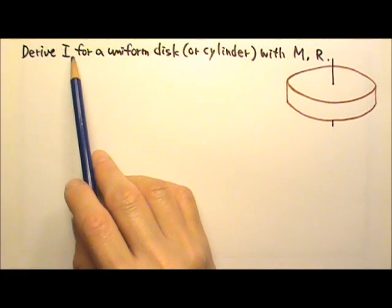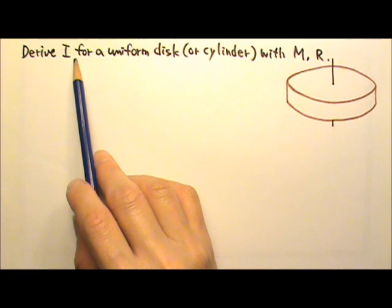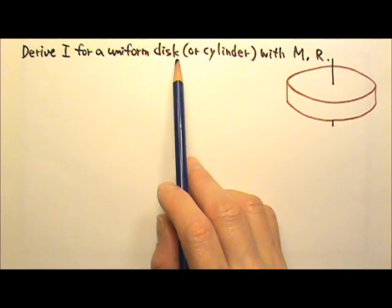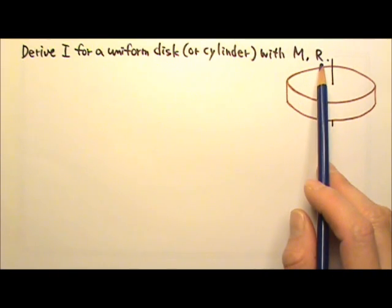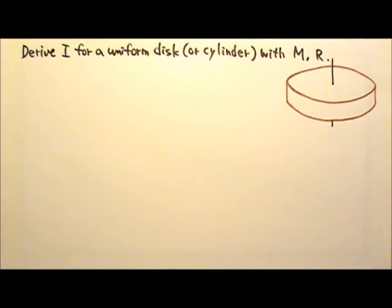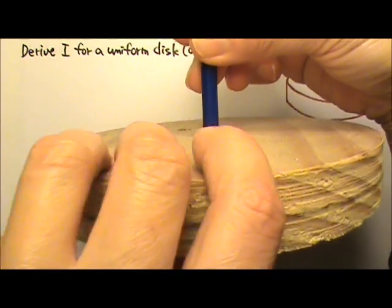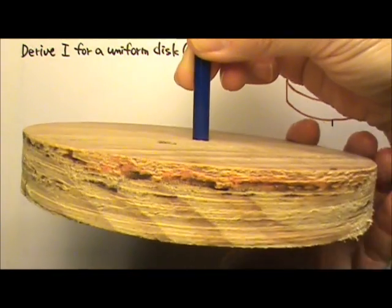Derive an expression for the rotational inertia or moment of inertia for a uniform solid disc or cylinder with mass m and radius r about its cylinder axis, meaning the disc or cylinder rotates like this about its symmetrical axis.